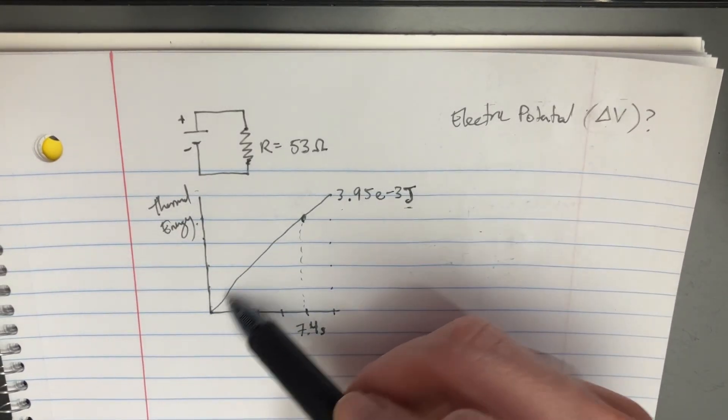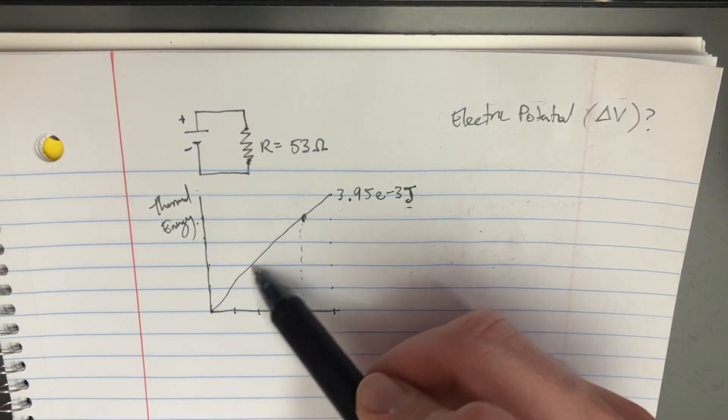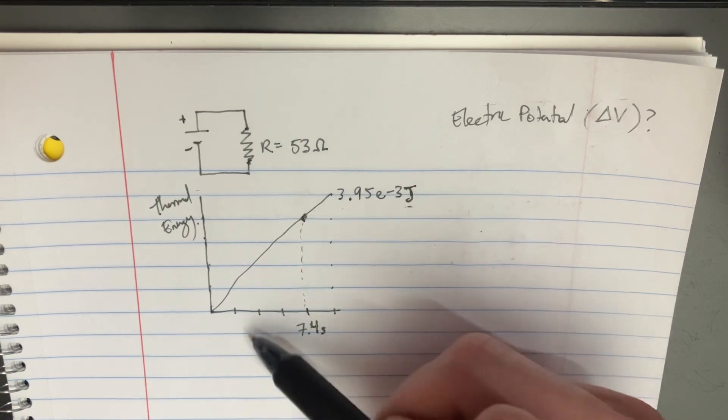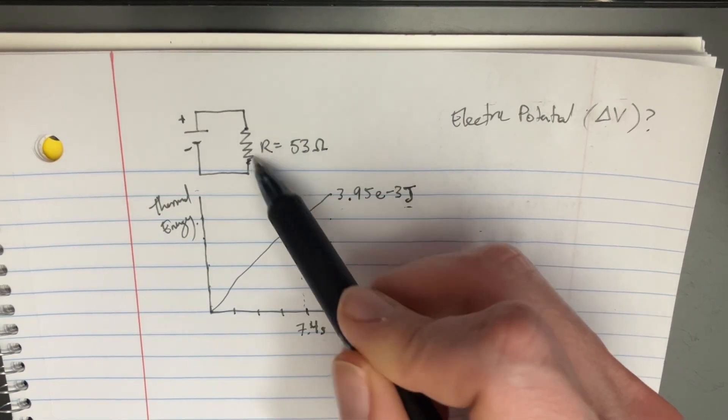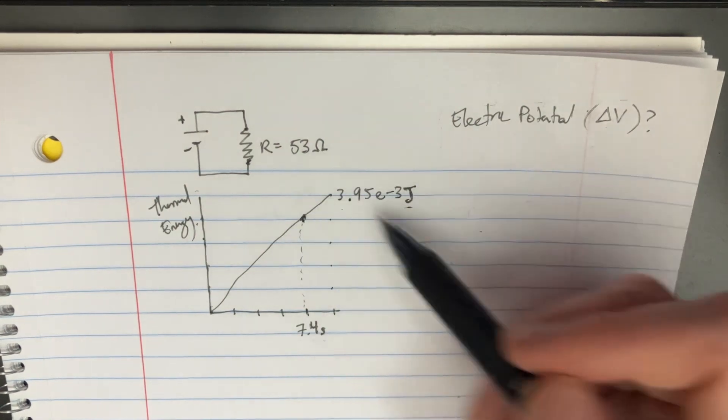This is a cool problem. We're given this chart of the output of thermal energy over time from this resistor that has 53 ohms of resistance.